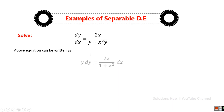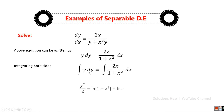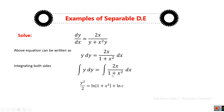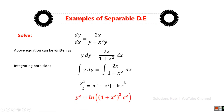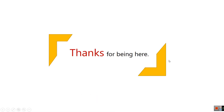To summarize the second example: we first separated the function of Y and the function of X. Then we integrated both sides — integration of Y gave Y²/2, and integrating the right side gave log(1 + X²) plus log C. After applying properties of logarithms we obtained the general solution of that differential equation. This sums up today's lesson on separable differential equations. Thank you so much for being here.